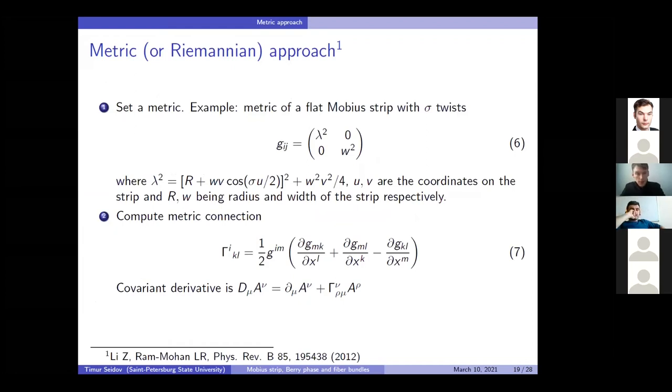So, now that we have this conception, I may explain the metric approach that is found in literature considering the Möbius strip. What they do first, they set a metric. For example, a metric of a Möbius strip with a sigma twist, which means that the number of twists is sigma. The metric is nice and good because it's diagonal. However, it turns out to be nonlinear in coordinates because u and v here are our coordinates. Then, you have to compute the connection. So, basically, this formula six gives you the distance between the two points at the Möbius strip. Yes. Parameterized in terms of u and v. Okay. Yes. Yes, of course.